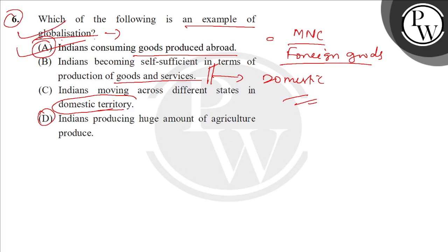So, integration of markets — global markets — means foreign goods are available in the domestic market. So many choices are solved. Clear?